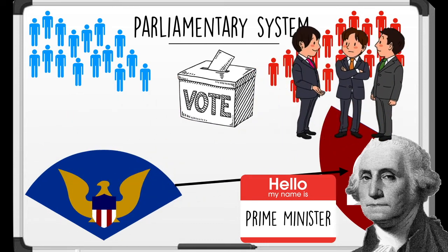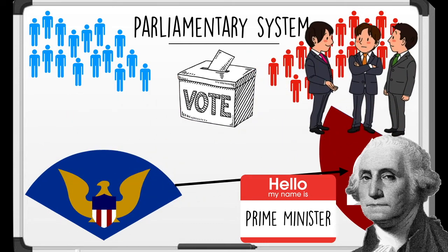There are a few other differences in the parliamentary system, like there's no real term limits for the executive leader. In the United States, the president may serve only two terms and then they're out. But in a parliamentary system, as long as the prime minister has the confidence of the legislative branch, they get to remain in power indefinitely.